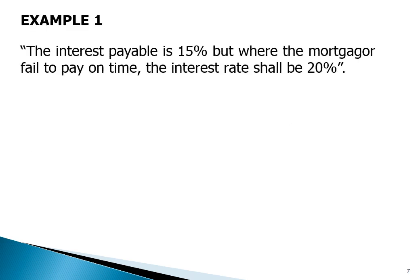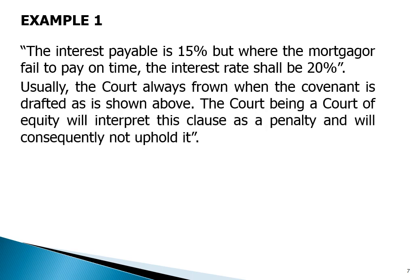For example: the interest payable is 15%, but where the mortgagor fails to pay on time, the interest rises to 20%. Usually the flaw is found when the covenant is drafted as shown above. The court, being a court of equity, will interpret this clause as a penalty and will consequently not uphold it.